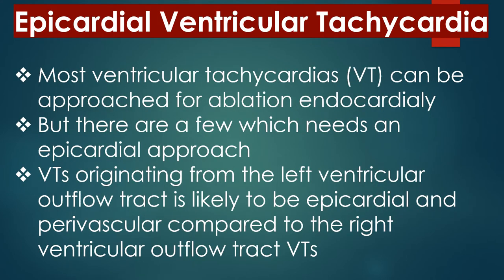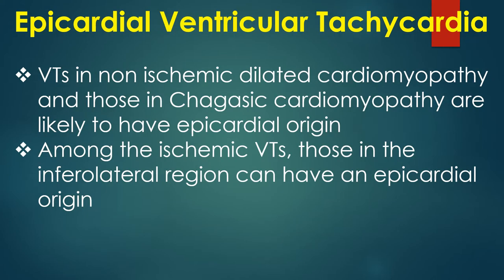Most ventricular tachycardias can be approached for catheter ablation endocardially, but there are a few which need an epicardial approach. VTs originating from the left ventricular outflow tract are likely to be epicardial and perivascular compared to right ventricular outflow tract VTs. VTs in non-ischemic dilated cardiomyopathy and those in chagasic cardiomyopathy are likely to have epicardial origin. Among ischemic VTs, those in the inferolateral region can have an epicardial origin.